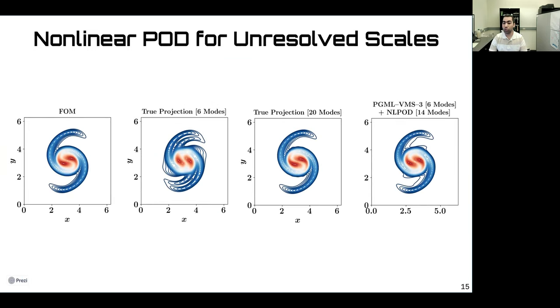Here are the results from combining the PGML with three-level VMS closure, plus nonlinear POD for the projection error. We see that the prediction here is very close to the full-order model solution. In this case, we use or select a total of 20 modes, and we capture almost 99% of the total energy in the system.